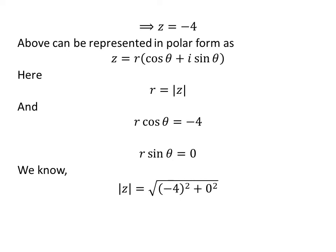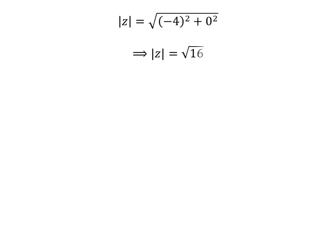As per the definition, |z| = √((-4)^2 + 0^2). So |z| = √16. Above implies |z| = 4, which equals r.